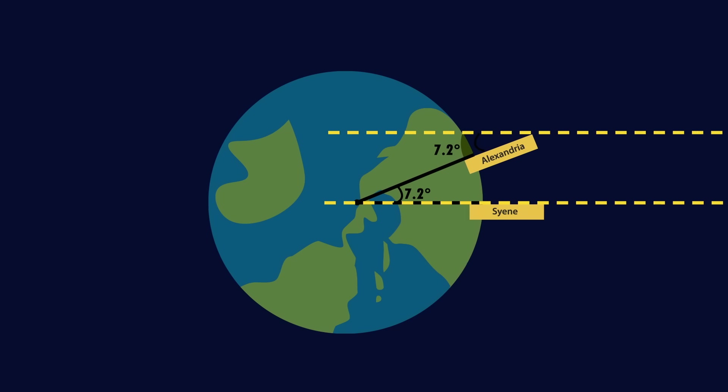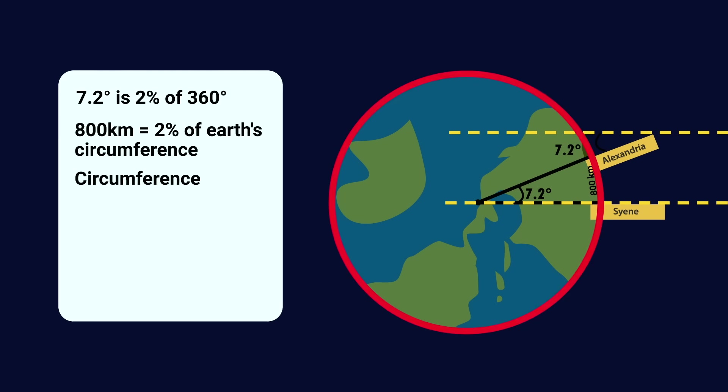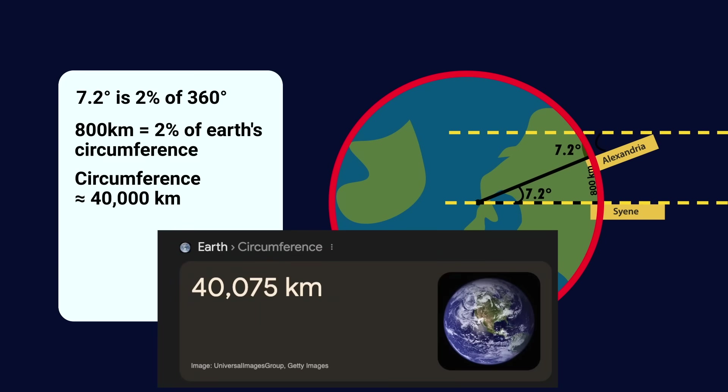He then had someone measure the distance between the two cities, which was about 800 kilometers. So because 7.2 degrees is 2% of 360 degrees, then the 800 kilometers would be 2% of the circumference of the Earth. Thus, the circumference is roughly 40,000 kilometers.